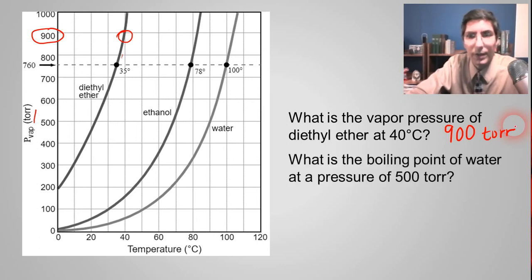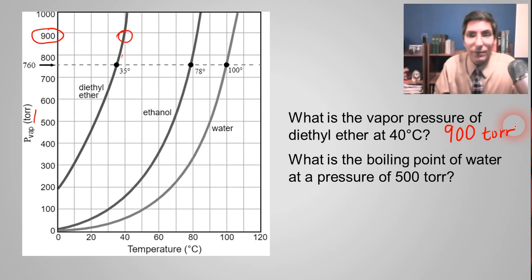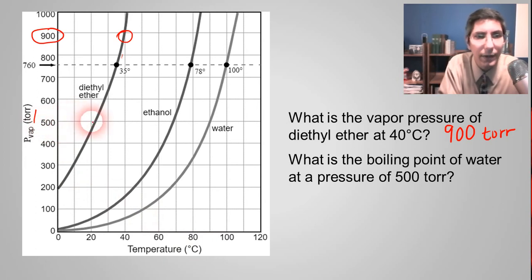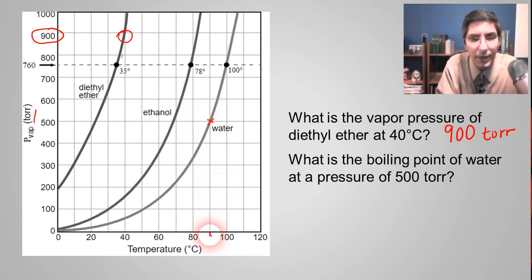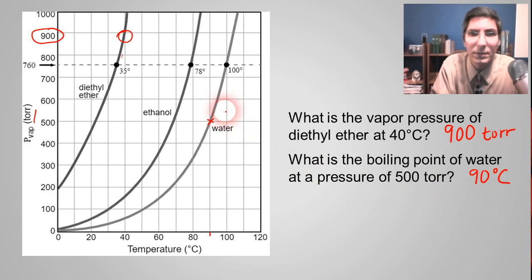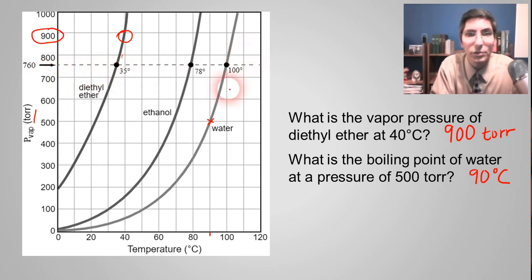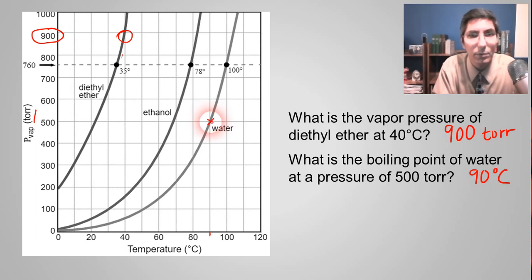What is the boiling point of water at a pressure of 500 torr? We find 500 torr on the graph and go over to the water curve — the third one. It looks like it's right at 90 degrees Celsius. Normally the boiling point of water is 100 degrees Celsius at normal sea level pressures of 760 torr. But if you're on a mountain where the pressure is lower, the boiling point of water is going to be lower — the boiling water there is just not as hot.